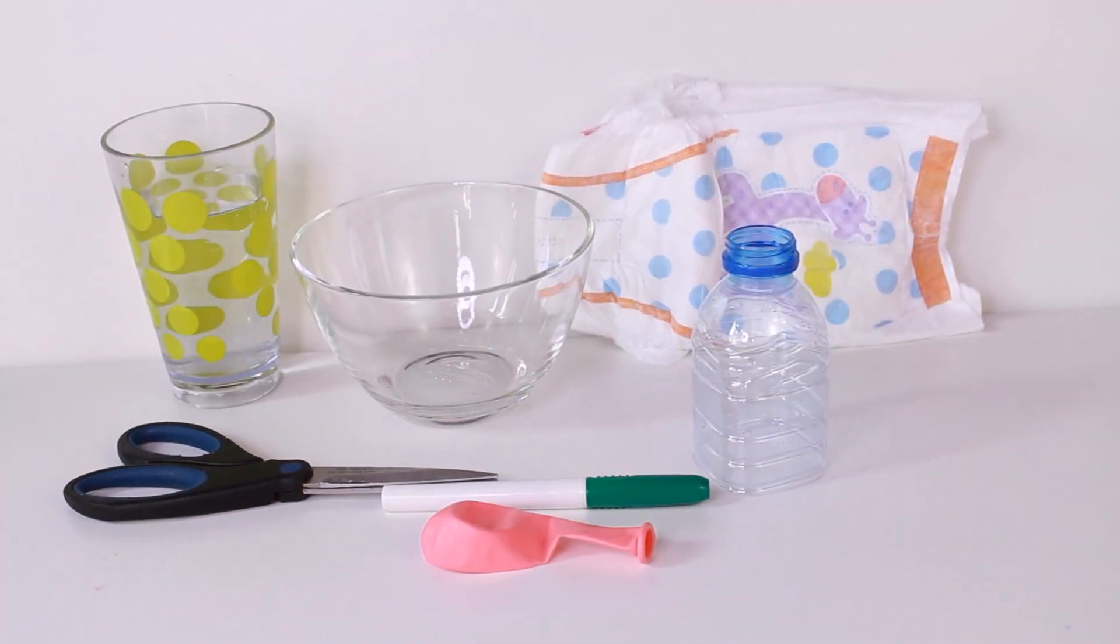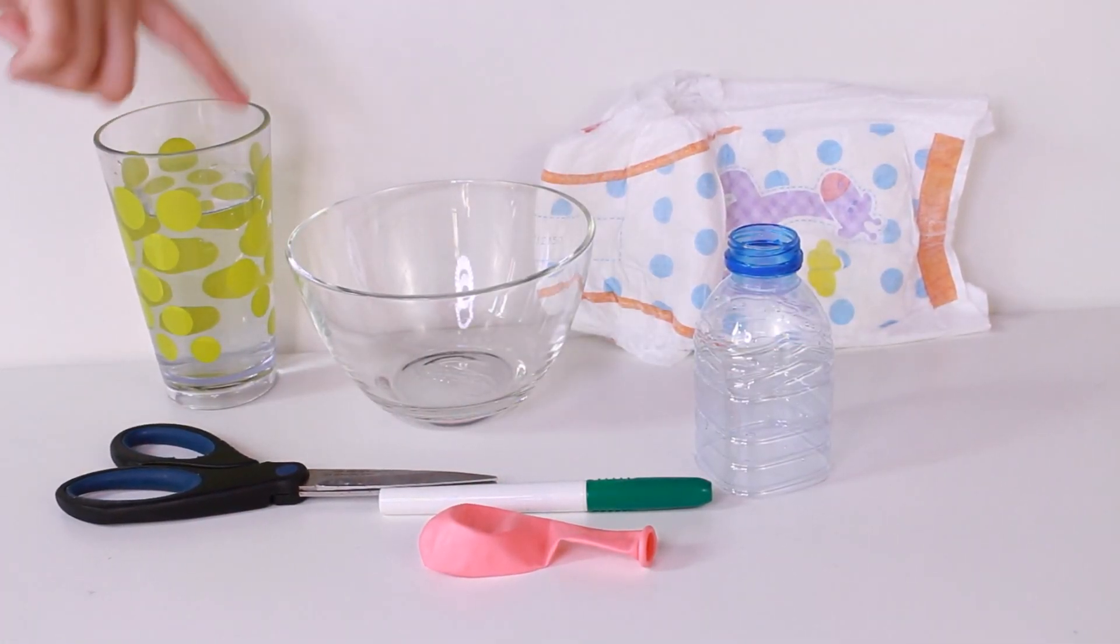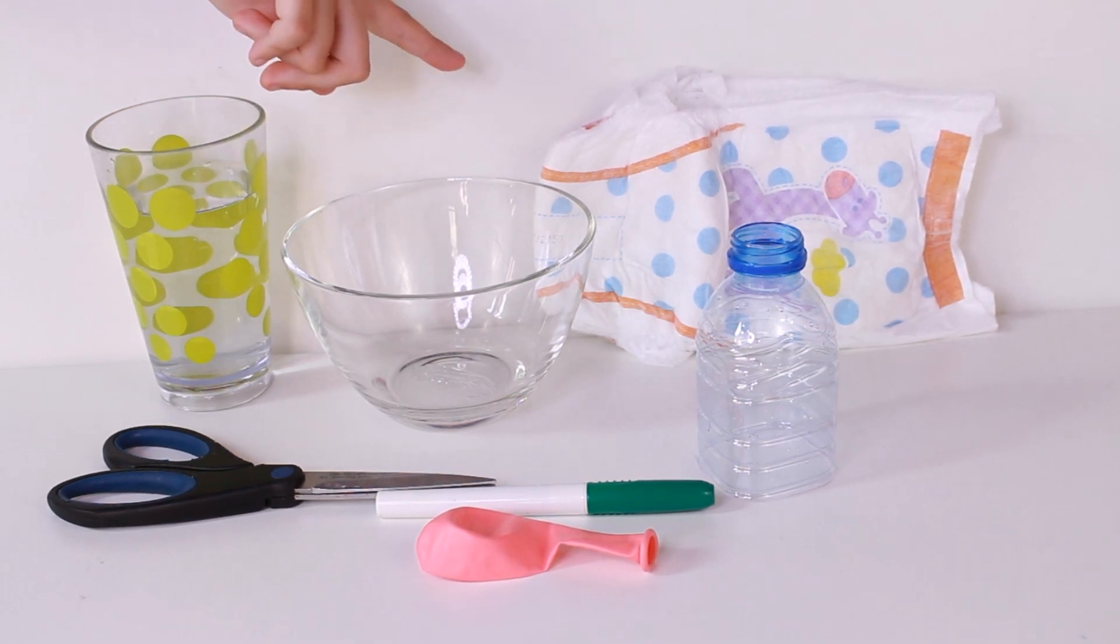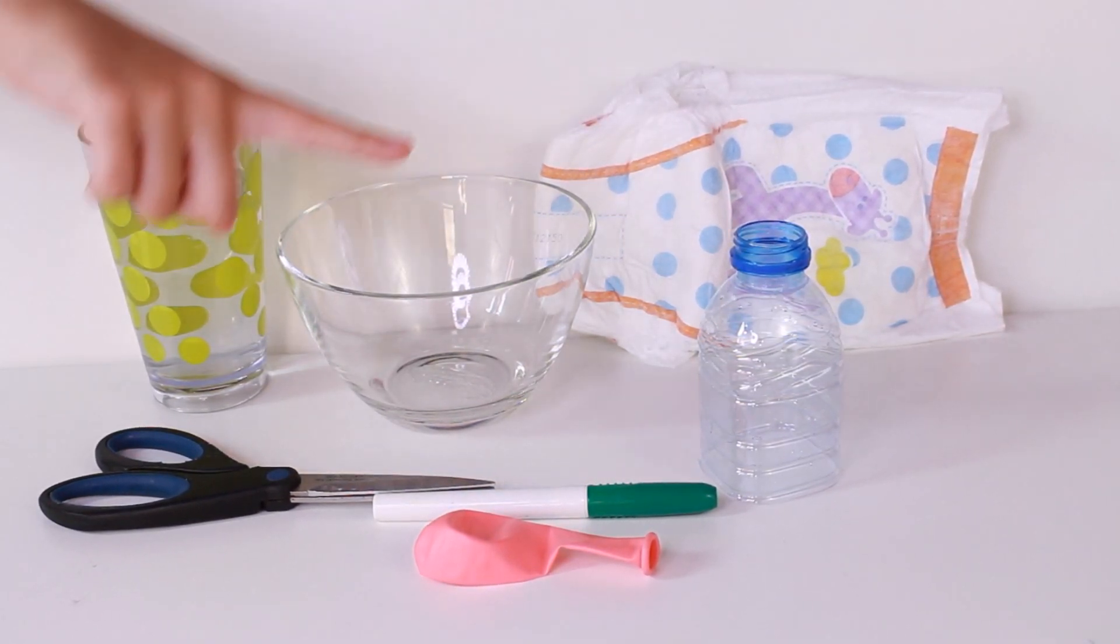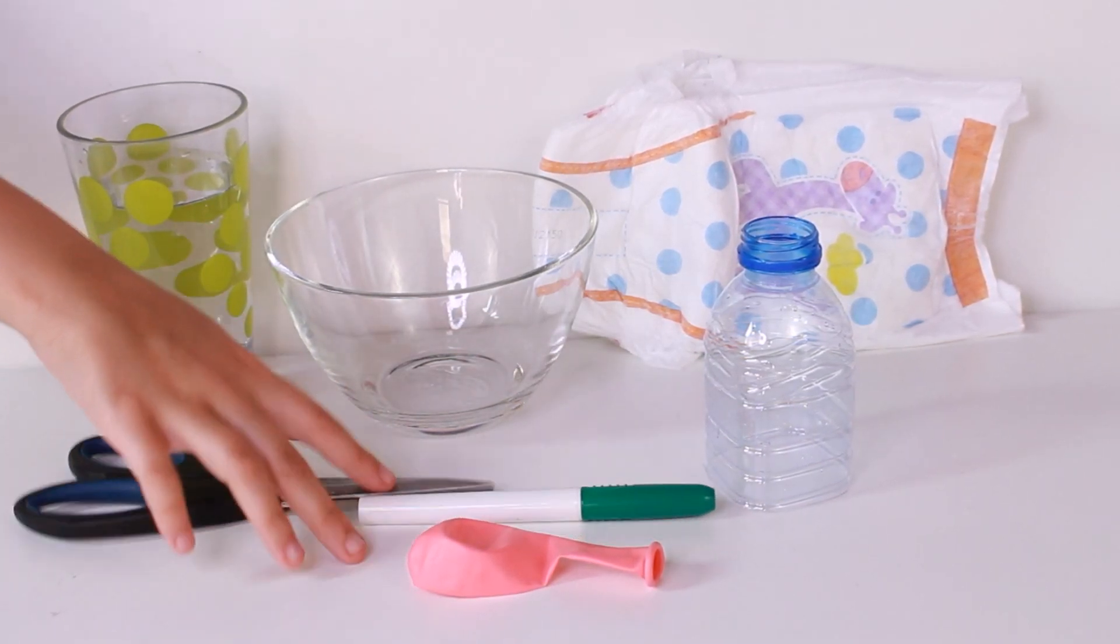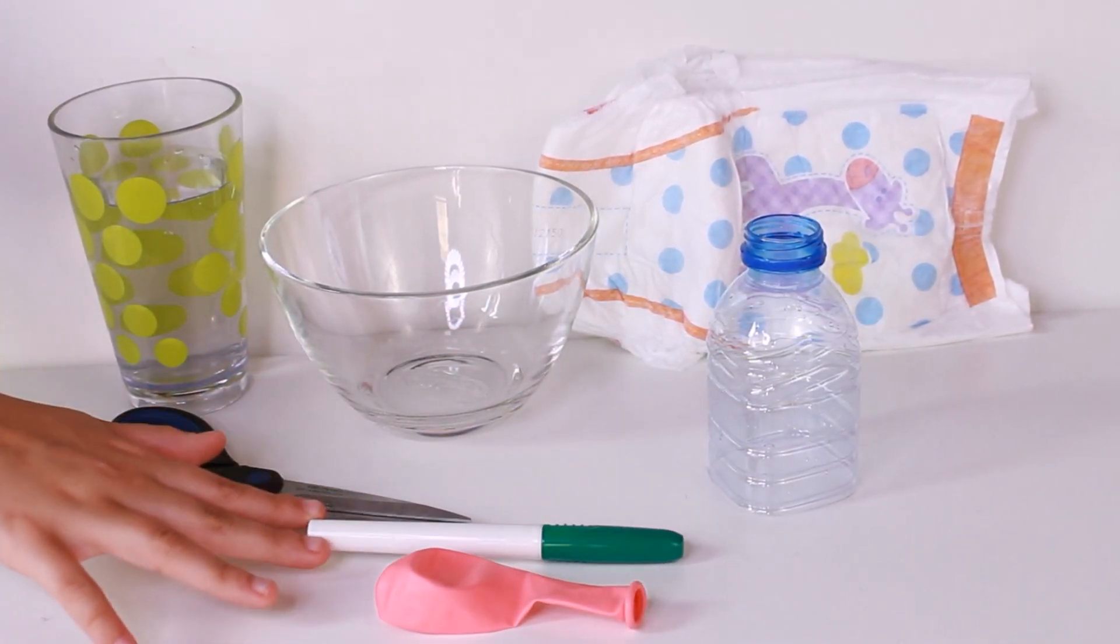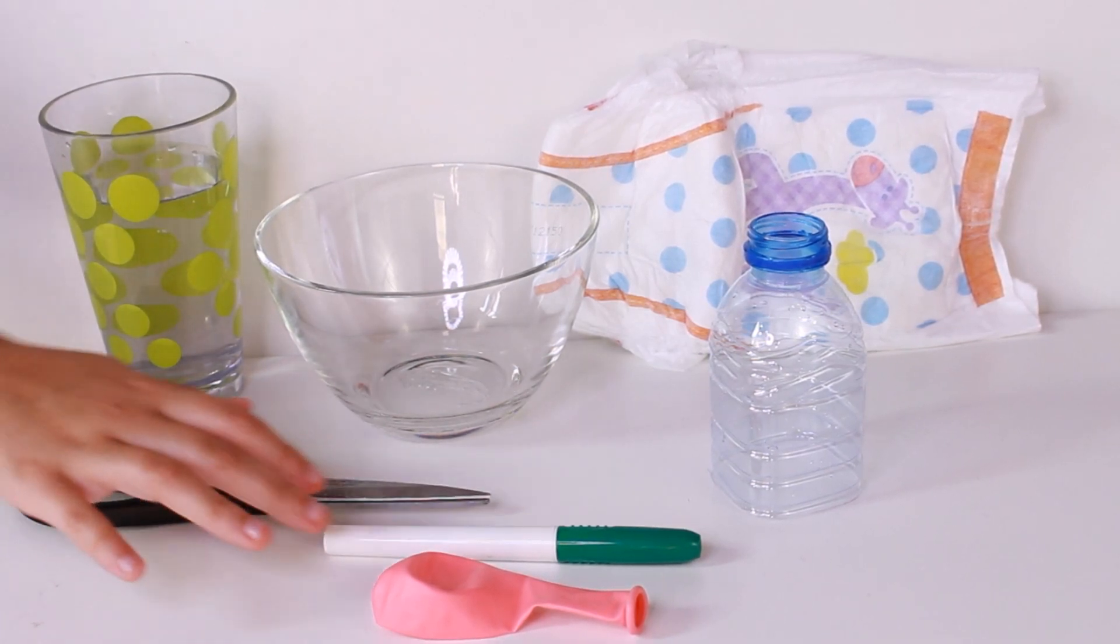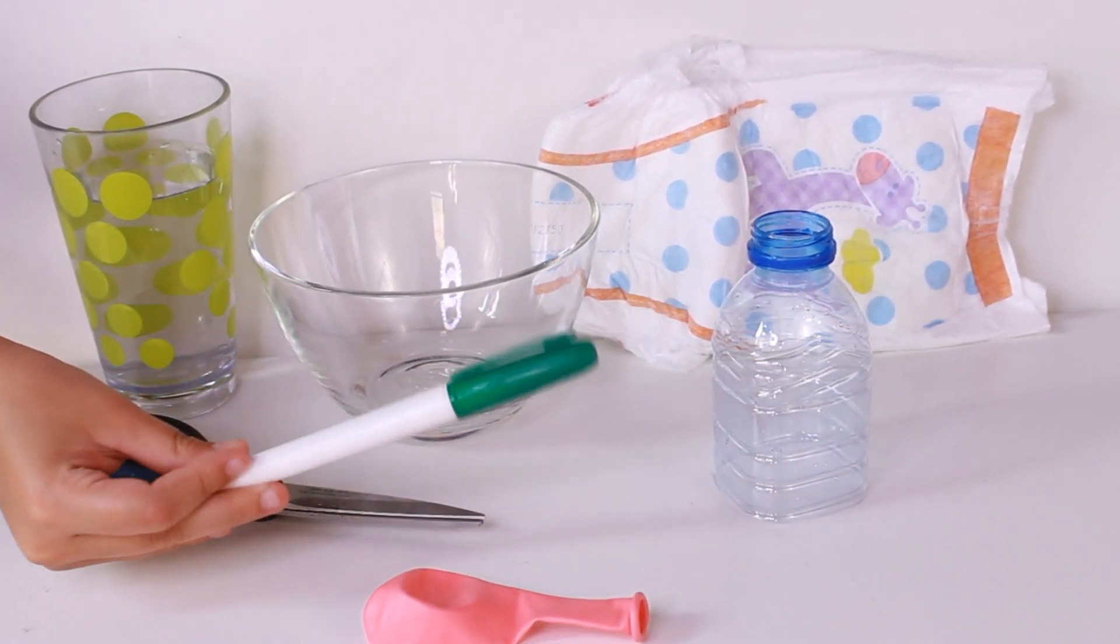What you need for this DIY is water, a bowl, a diaper, the top of a bottle, a balloon, scissors, and a kind of stick to push it through. I'm using something like a sharpie, but you can also use a real sharpie or something else.